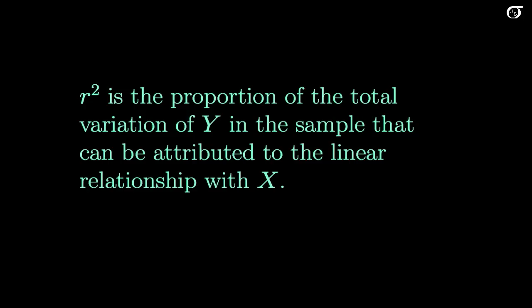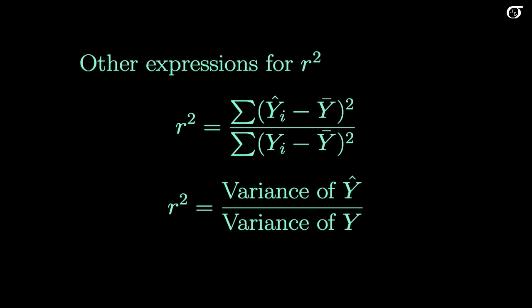We can write this in different ways. Other expressions for R squared: if we look at this, the variance of the predicted values for our sample data over the variance of the observed values in our sample data. So let's take a look at what that means in a plot.